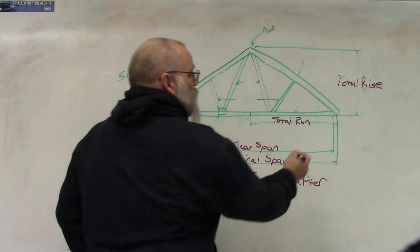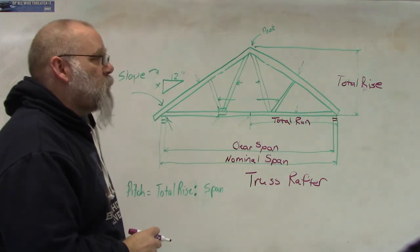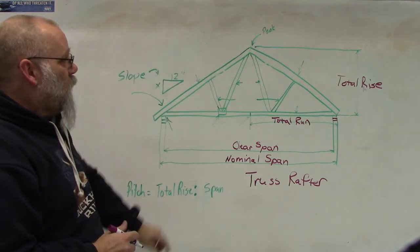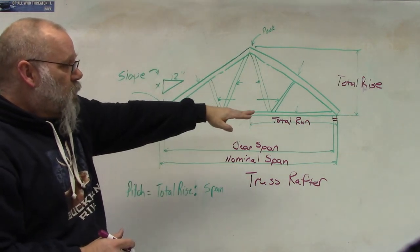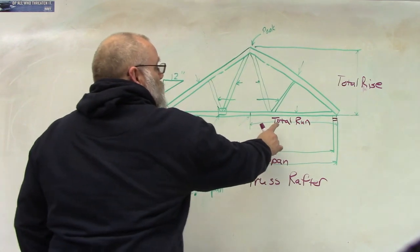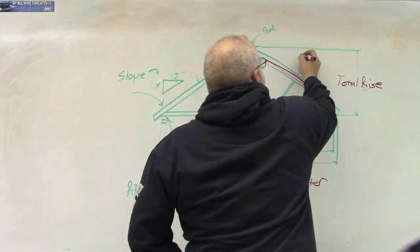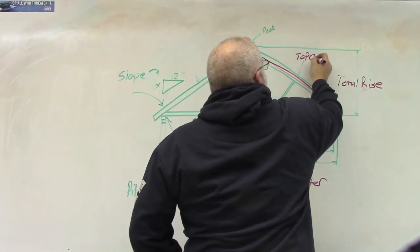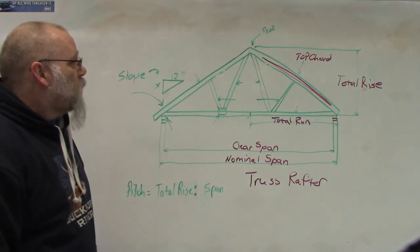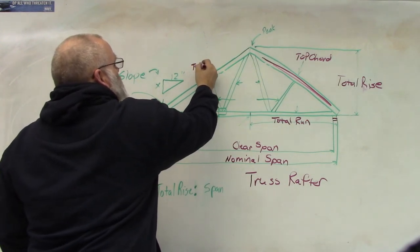Total rise is the distance from the top of the double top plate to the top of the peak up there. That's the peak — where the two top cords come together. So total rise goes from the peak to the top of the double top plate. This board that runs along here is called a top cord, and this one over here on the other side would also be a top cord.